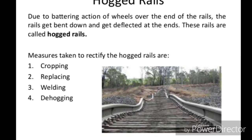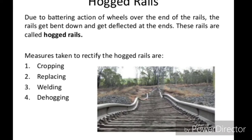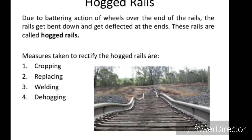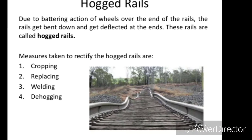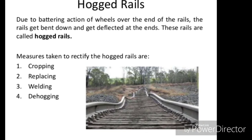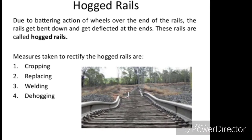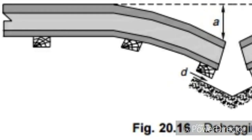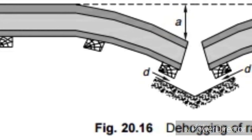The next defect is hog rails. Due to the battering action of the wheels over the ends of the rails, the rail gets bent downward and deflected at the ends. These are called hog rails. This hogging at the ends is due to poor or loose packing under the joints. The measures adopted for this are cropping, replacing, and dehogging.